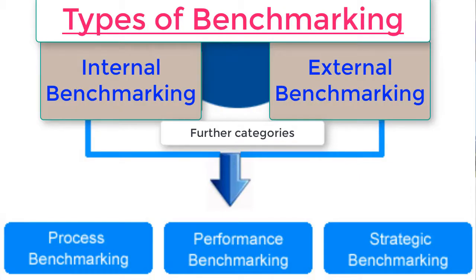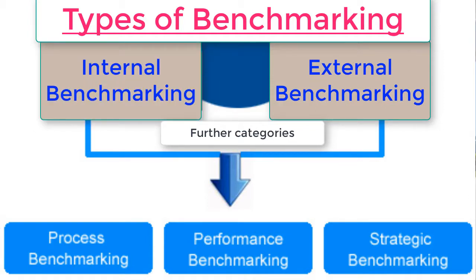Benchmarking can either be internal or external. For internal benchmarking, we are talking about the best practices within an organization — that is, within different units of the organization. For example, different plant sites that perform the same activities can be compared. The plant unit with the best performance for a given activity set becomes the standard, and other units then have to target and meet or exceed that performance standard.